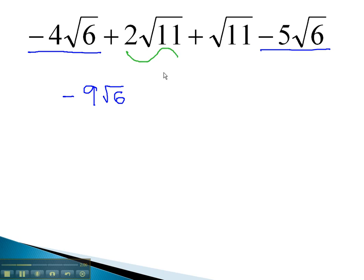And similarly, 2 root 11 plus root 11, which we'll assume has a 1 in front, means we now have 3 square roots of 11. This expression is now simplified. We cannot combine the radicals together, because they are not like radicals.